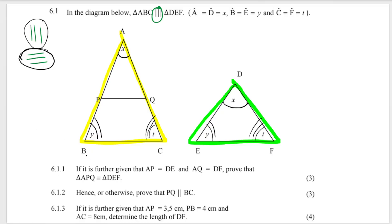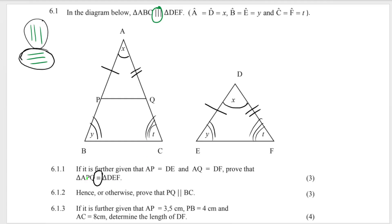6.1.1. It is further given that AP is equal to DE — so they're telling me this line over here is equal to this line. And AQ, this line over here, is equal to DF, this line over here. Prove that triangle APQ is congruent to triangle DEF. So let's highlight the triangles in question. They want us to prove that APQ — that's this top triangle over here — is congruent to DEF.